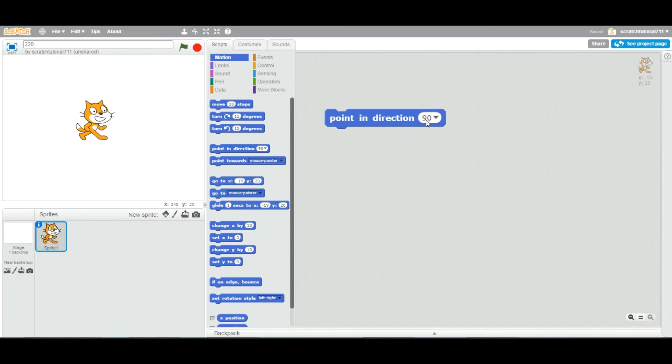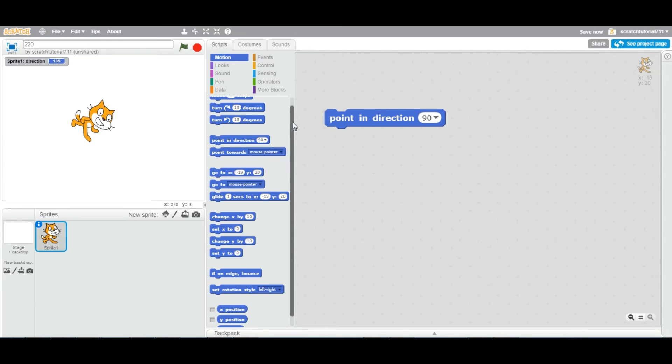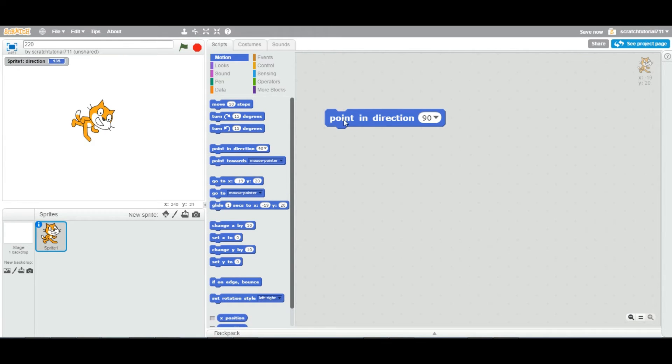By default, you can see that point in a direction is pointing toward 90. I'm going to change this cat to point towards some other degree, and I'm going to add a direction onto my stage. It says the cat is currently pointing toward 135 degrees. If I double click this point in a direction, the cat turned and is now pointing toward 90 degrees.